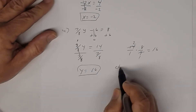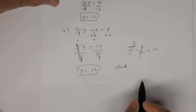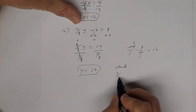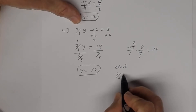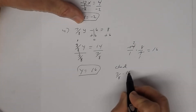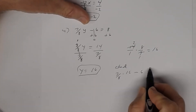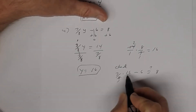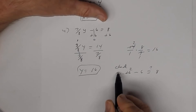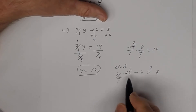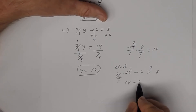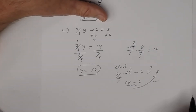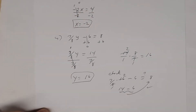Let's check: (7/8)(16) - 6. 8 into 16 is 2, so 7 times 2 = 14. Then 14 - 6 = 8, which equals the right side. Confirmed.